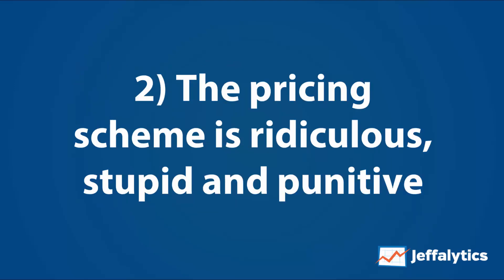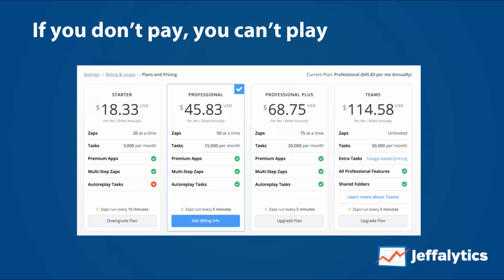Number two: the pricing scheme is ridiculous and punitive. I absolutely hate punitive pricing schemes — when they charge you for the success of your business. They charge you not only for the number of zaps and premium apps, but also for tasks. The jump from 3,000 to 15,000 tasks per month is ridiculous.